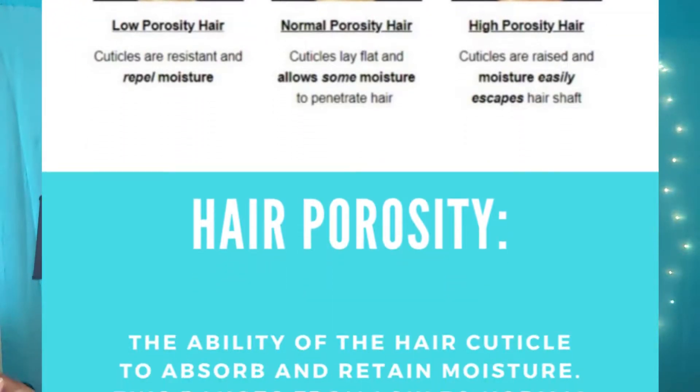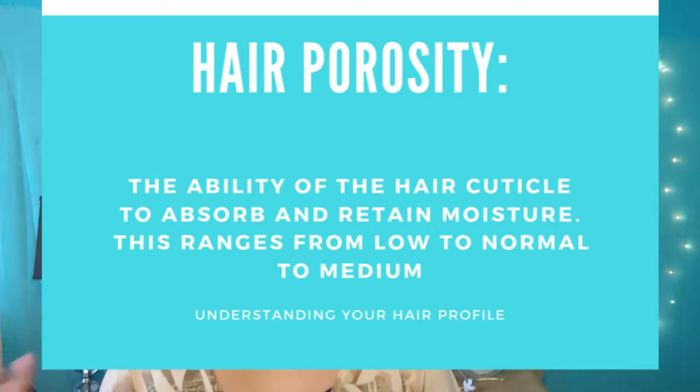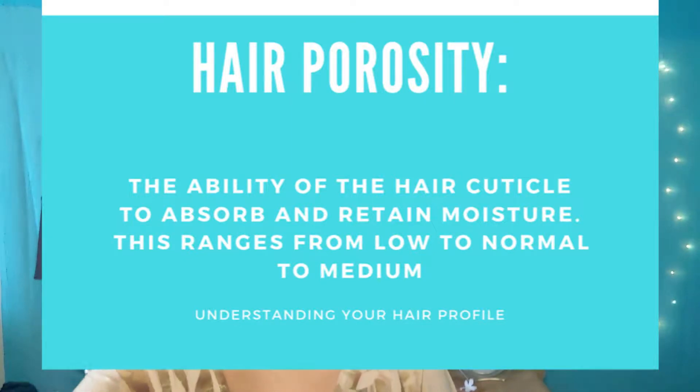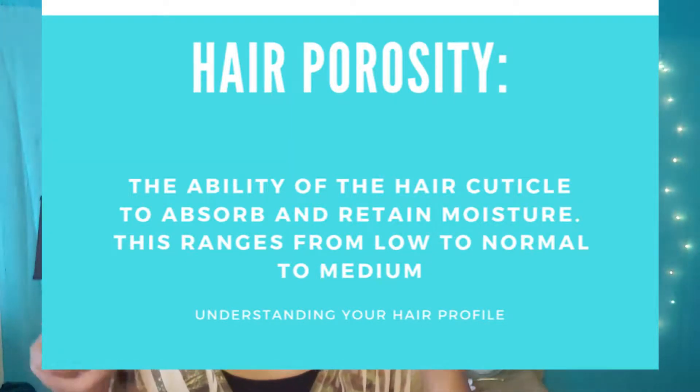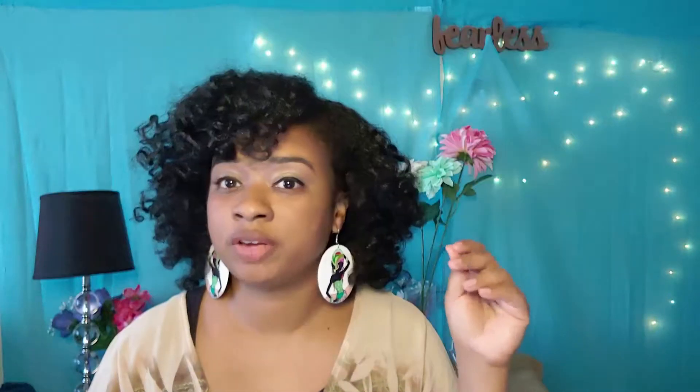Basically, hair porosity is the ability for your hair to absorb moisture and also to retain that moisture. When you look at a hair strand — and I'm going to insert charts here to help you visualize — there are several layers it's made up of: the cuticle, the cortex, and the medulla. The medulla is the center layer, the cortex is outside of that, and the cuticle is on the outside of the strand. The cuticle will have several layers depending on how thick your hair strand is. Imagine the shingles on a roof — they sit on top of each other. You have the same situation going on with your hair strand.